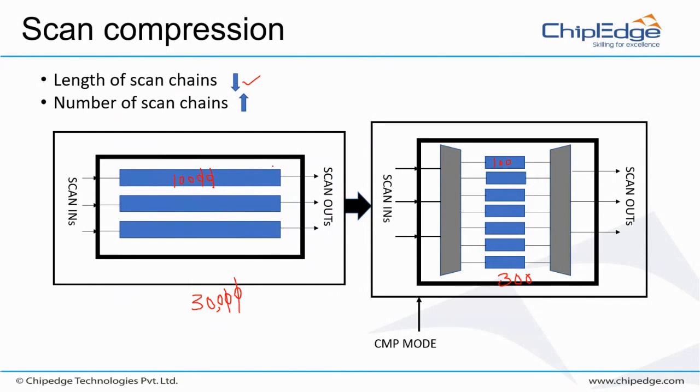You have 300 chains compared to 3 originally. There's something called compression ratio: 300 divided by 3, which is 100x compression. You compress the scan chains so that 3 became 300, and 10,000 became 100 in length. Number of scan chains increased while length decreased - from 10,000 to 100 in length and from 3 to 300 in number.